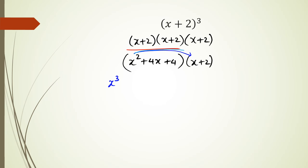Then x² times 2 gives 2x². Then 4x times x equals 4x². Then 4x times 2 is 8x. Then 4 times x is 4x. And 4 times 2 is 8.